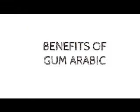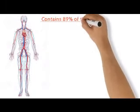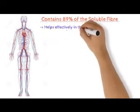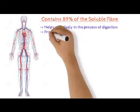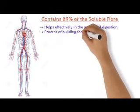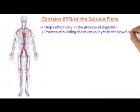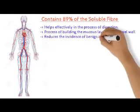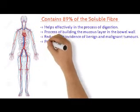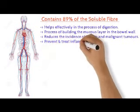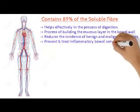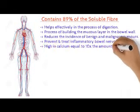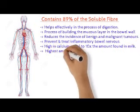Gum arabic contains 89% soluble fiber, which helps effectively in the process of digestion. It helps in building the mucous layer in the bowel wall, which has an effective role in the prevention of digestive tract issues. It reduces the incidence of benign and malignant tumors, and helps in the prevention and treatment of inflammatory bowel disease. It contains a high proportion of calcium, equal to 10 times the amount found in milk, and contains the highest amount of soluble fiber and calcium among all foods.